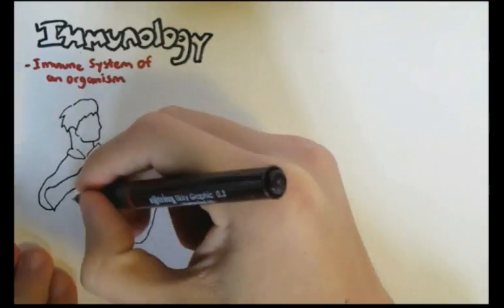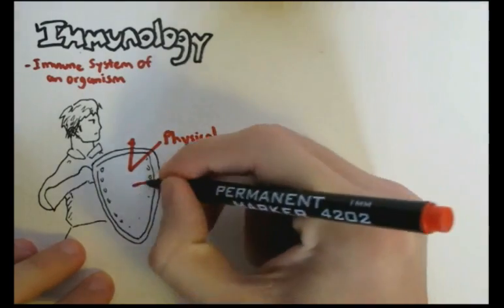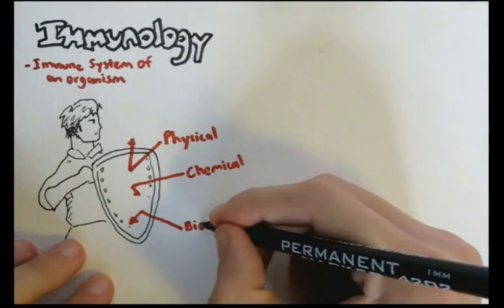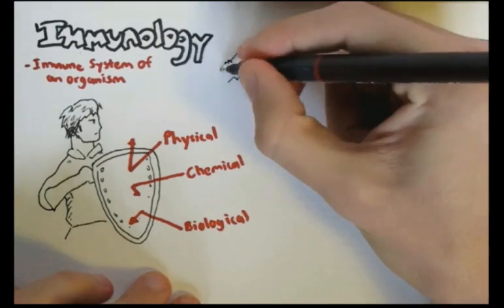Immunology basically studies the immune system of an organism and how it protects it from physical, chemical and biological invasion. Immunology is a confusing subject in science.